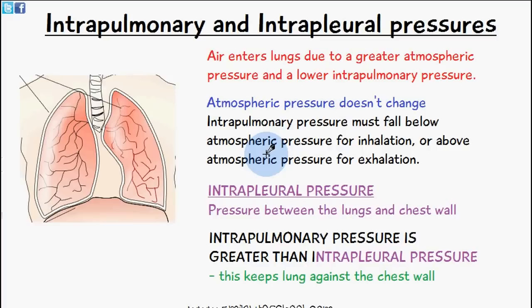The lungs, via the mechanisms of ventilation, have an alternating intrapulmonary pressure in order for the mechanism of ventilation to proceed. Intrapulmonary pressure must fall below atmospheric pressure for inhalation, or above atmospheric pressure for exhalation.